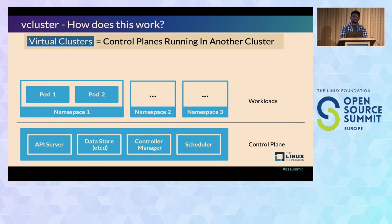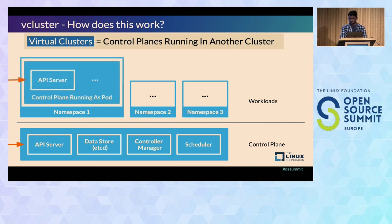What vCluster does is it spins an API server and some other components in pods in namespace. So we are running their control plane as a pod and the user will connect to the API server which is running inside that pod.